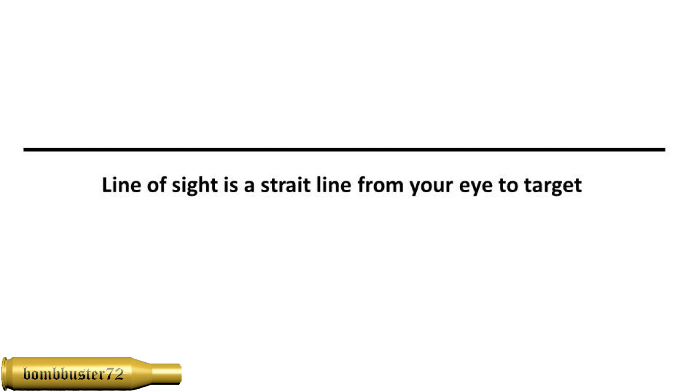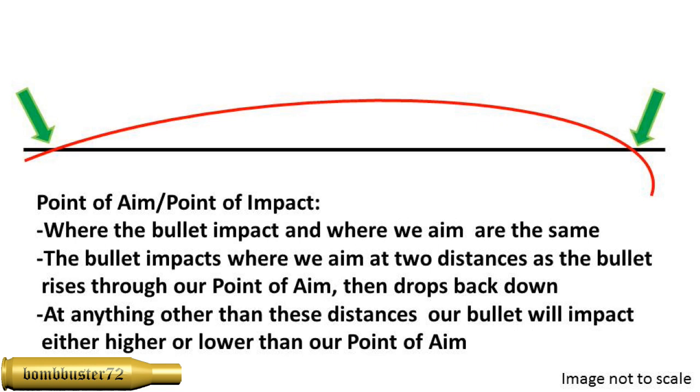So to understand exactly what's going on, we need to understand what line of sight is. The line of sight that we're talking about is from our eye to the target, a straight line to the target. As we're looking through the sights, what we're talking about is our point of aim, point of impact. This is where the bullet impacts where we're aiming. So if we have crosshairs, if we're looking at our target, our sights, it is exactly where it's going to hit.